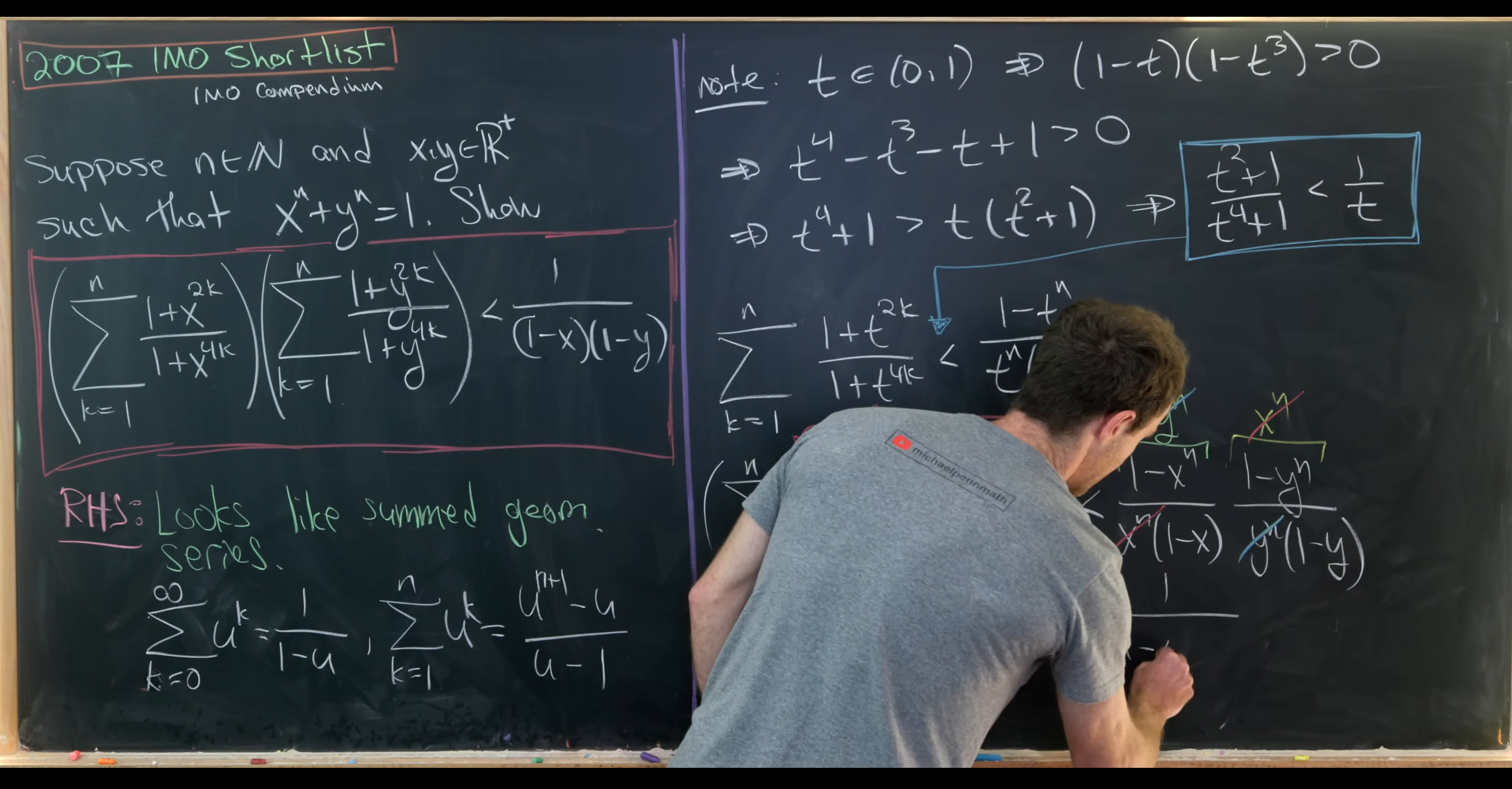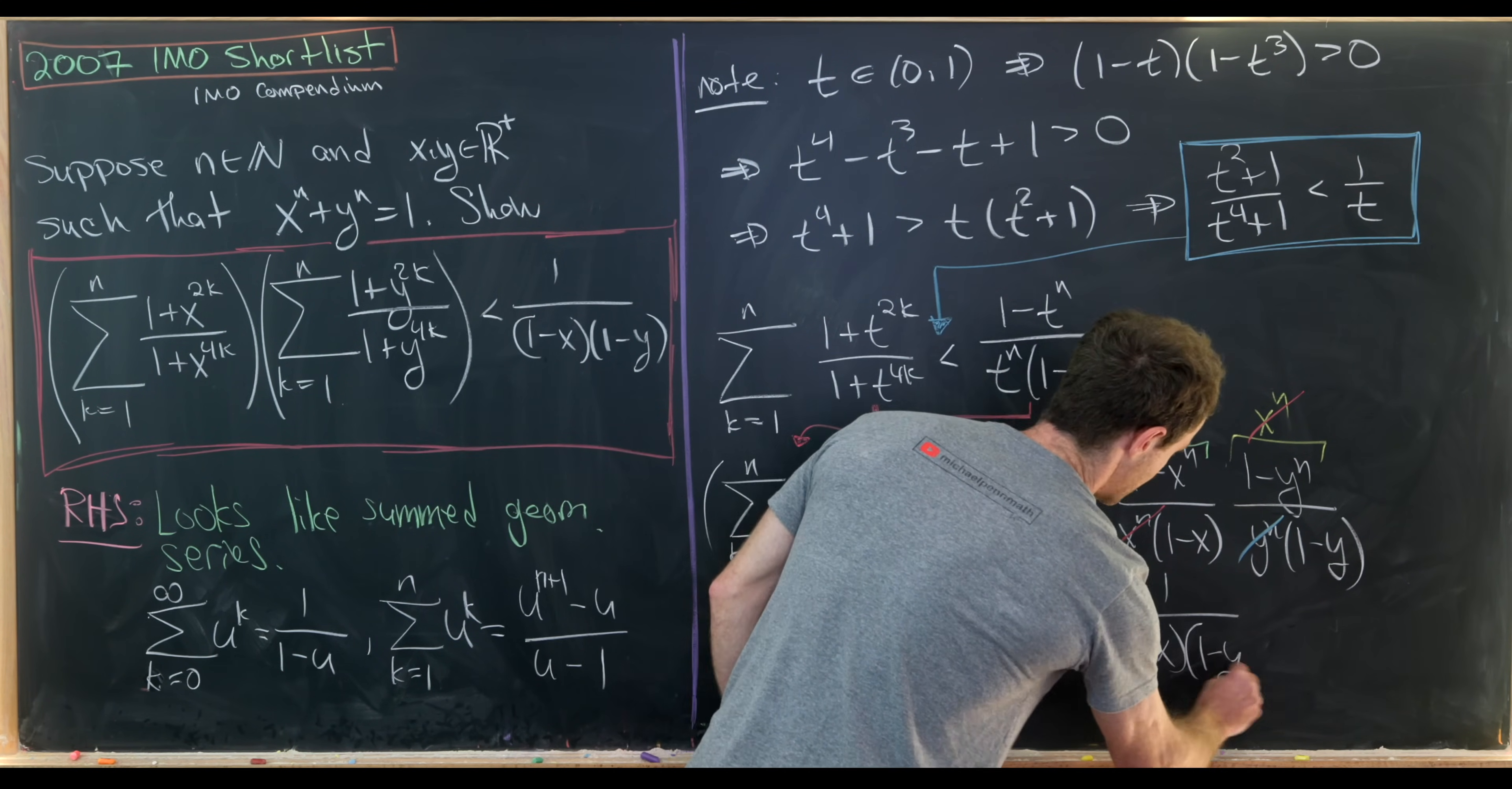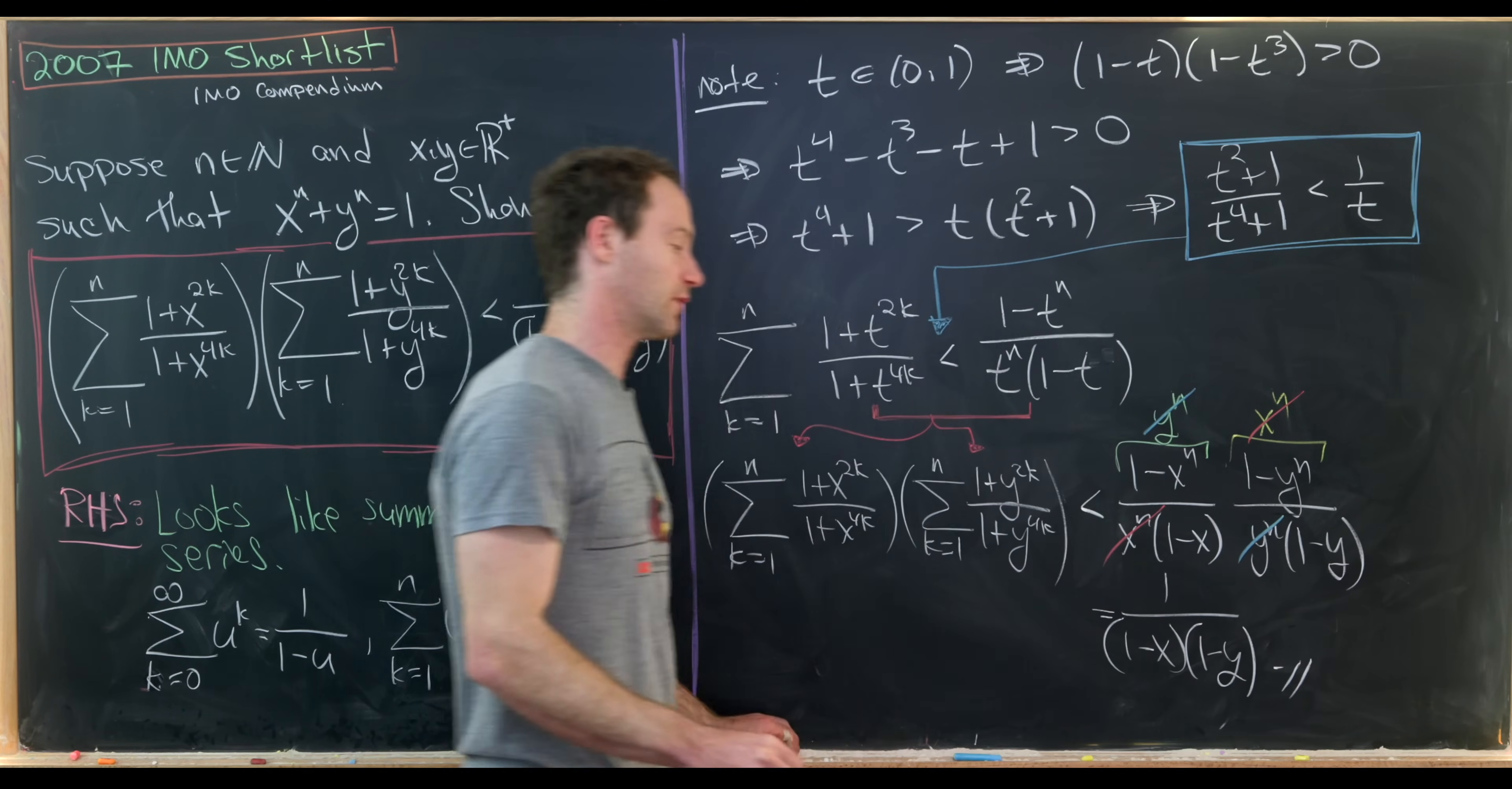But after that cancellation, we're left with 1 over (1 minus x) times (1 minus y), which is exactly where we wanted to end up.